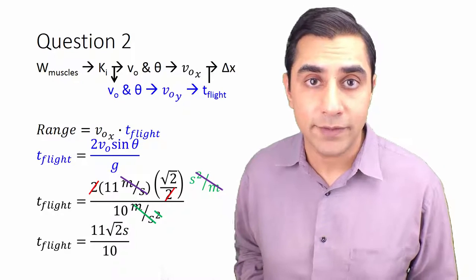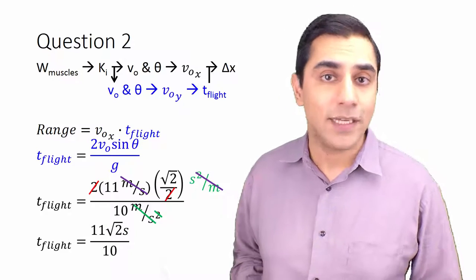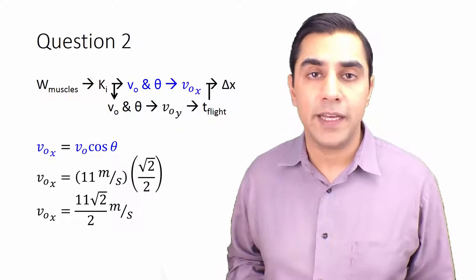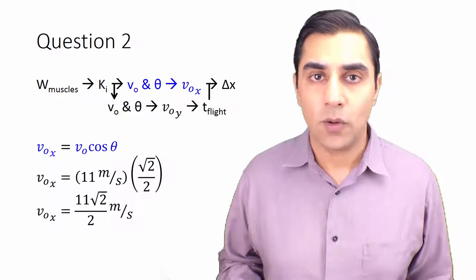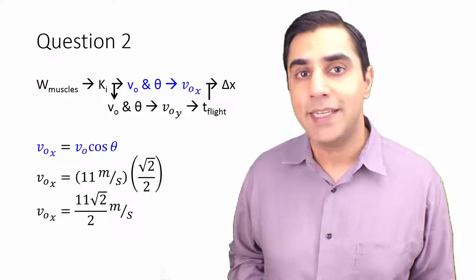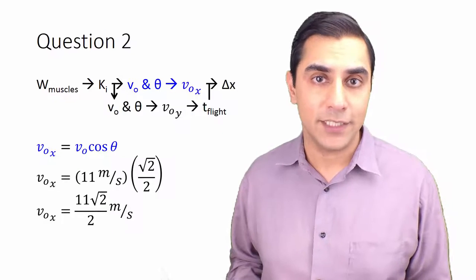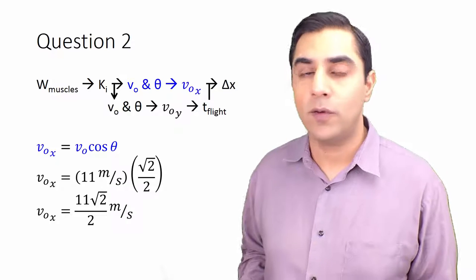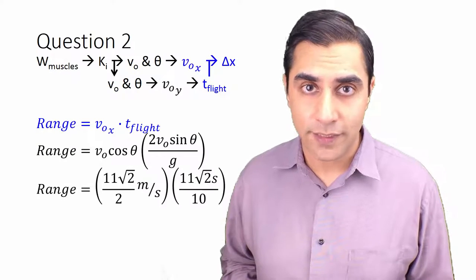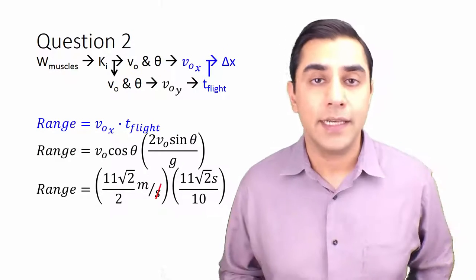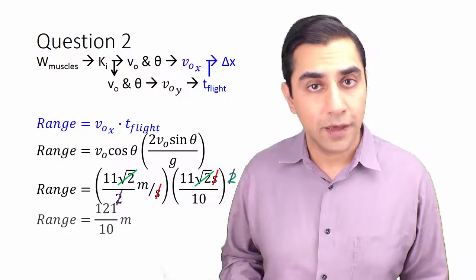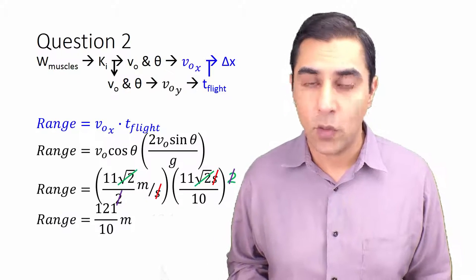Our time of flight is 11√2 over 10 seconds. It's best to keep things in fractional form until we're done calculating. The last interim calculation is to get the horizontal component of the velocity, which in air-resistance-free projectile motion equals the horizontal component of the initial velocity vector. Plugging in, we get a horizontal velocity of 11√2 over 2 meters per second. Now we simply multiply them together: the seconds cross out, the two √2 terms in the numerator multiply to make 2, which then crosses out with the 2 in the denominator.